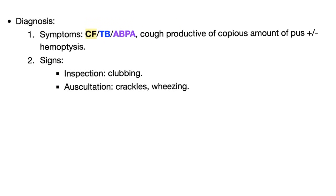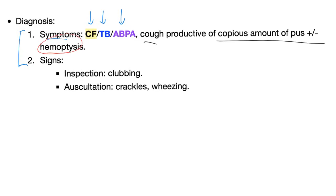How to diagnose bronchiectasis? You need the clinical diagnosis first — symptoms and signs. Patient with history of cystic fibrosis, TB, or allergic bronchopulmonary aspergillosis, coughing foul-smelling, copious purulent sputum, possibly with hemoptysis. On inspection you find clubbing. On auscultation, you'll hear crackles and wheezing.